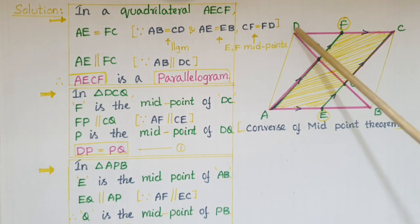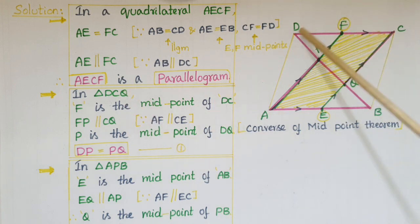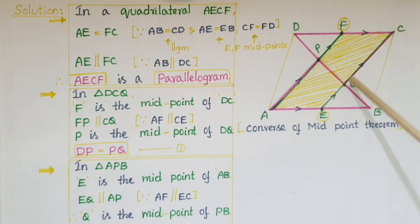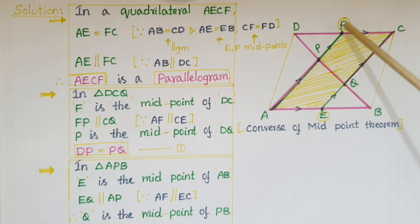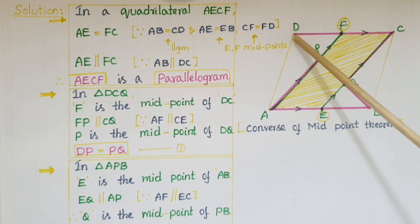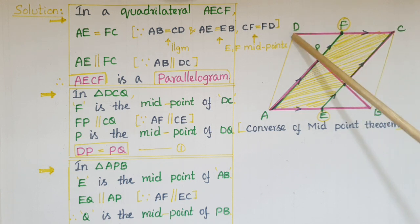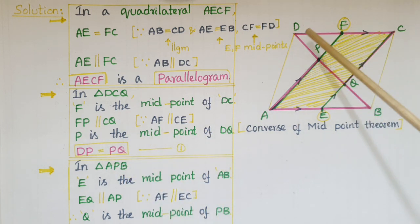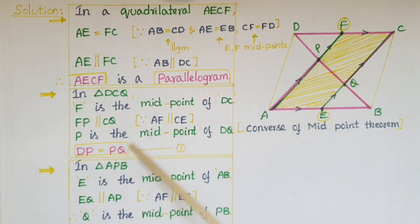Now, consider triangle DCQ. In triangle DCQ, F is the midpoint of side DC — this is given in the problem — and FP is parallel to CQ, since we just proved that AECF is a parallelogram, so AF is parallel to EC, which means FP is parallel to CQ. By the converse of the midpoint theorem, if a line drawn through the midpoint of one side of a triangle is parallel to another side, it bisects the third side. Here, DQ is the third side, so P is the midpoint of DQ. Therefore, DP is equal to PQ. This is the first equation.